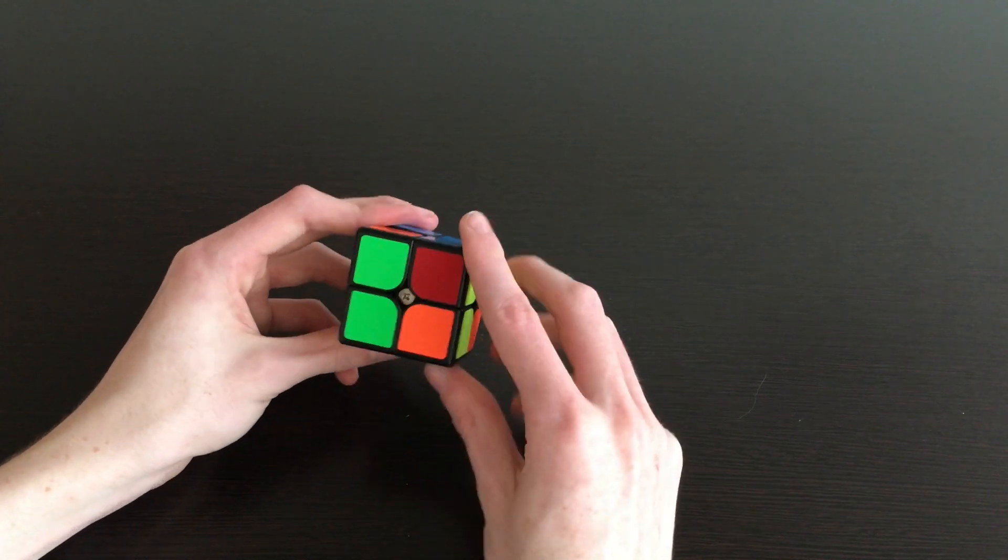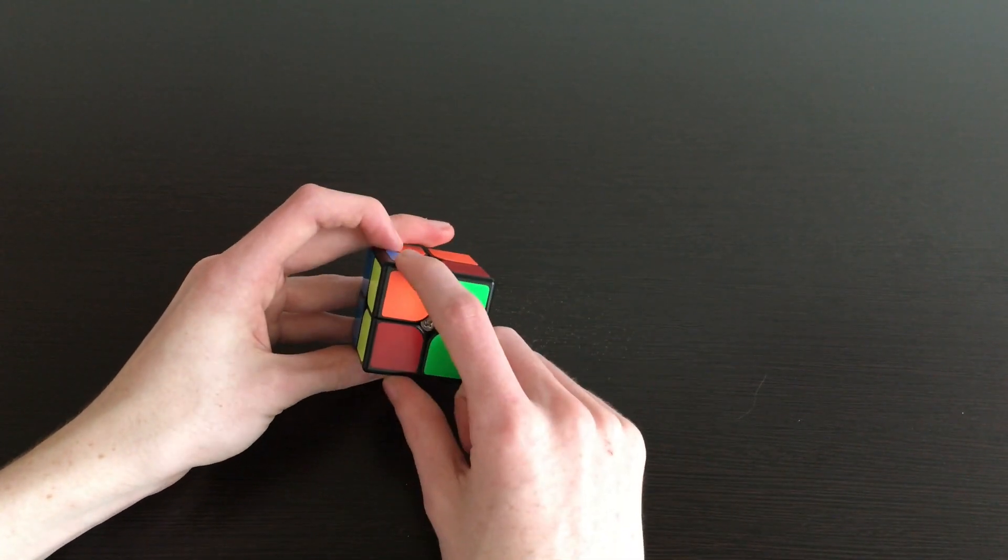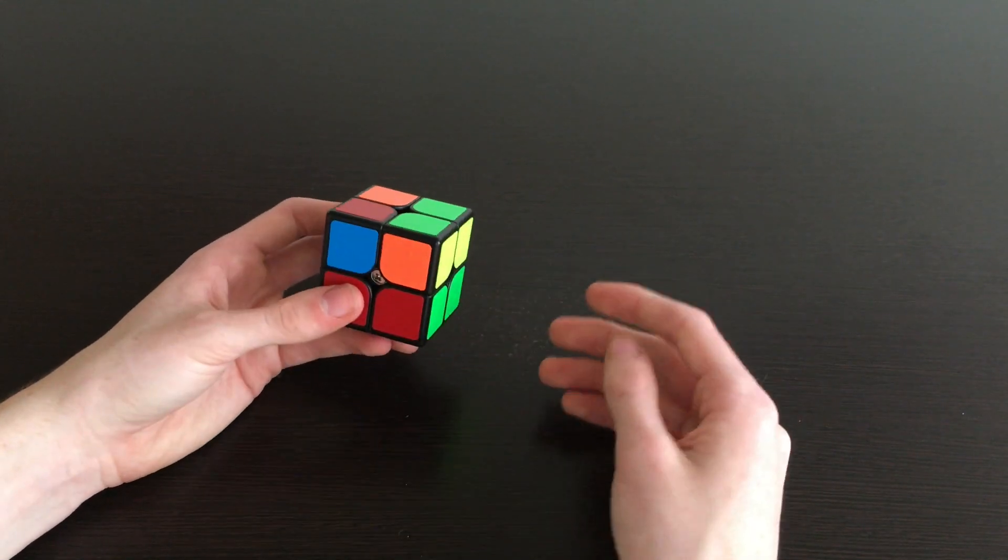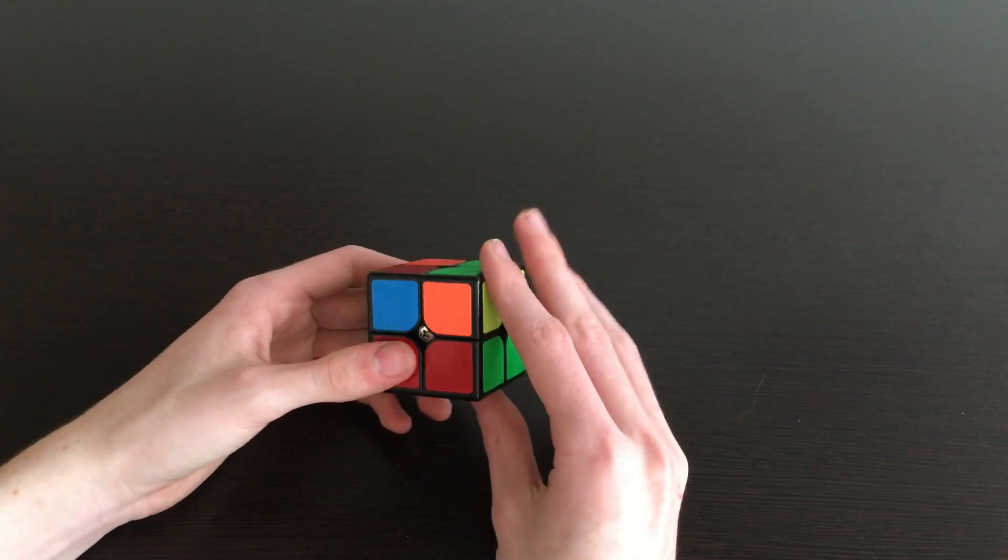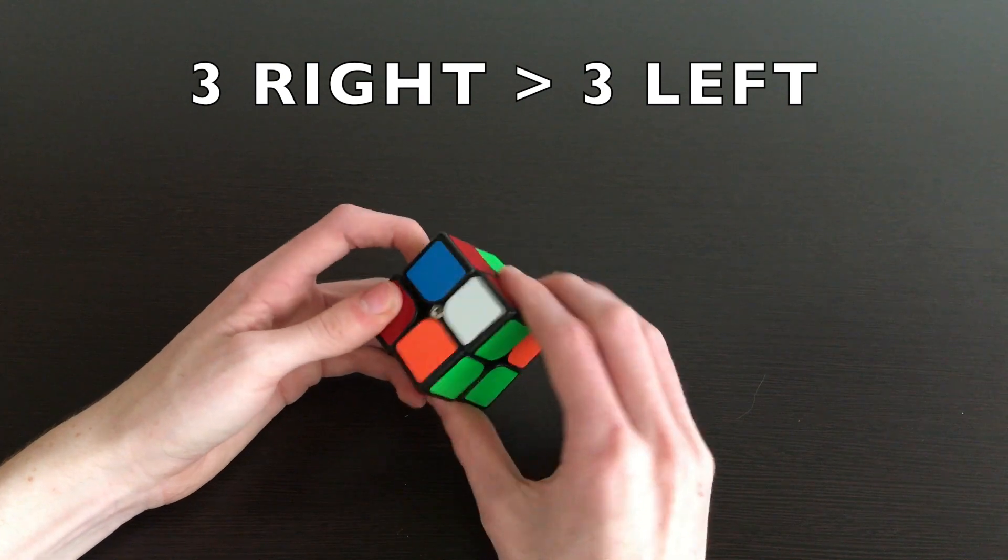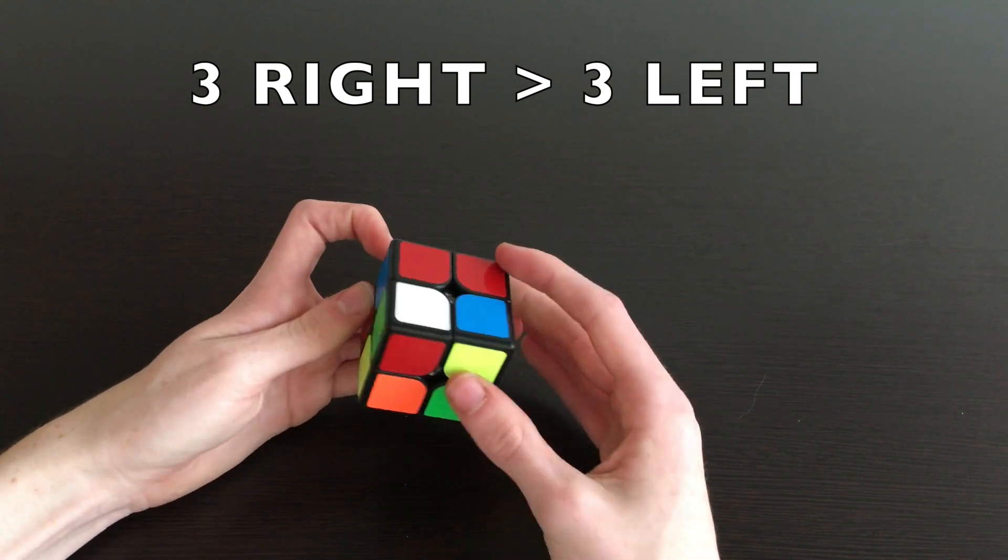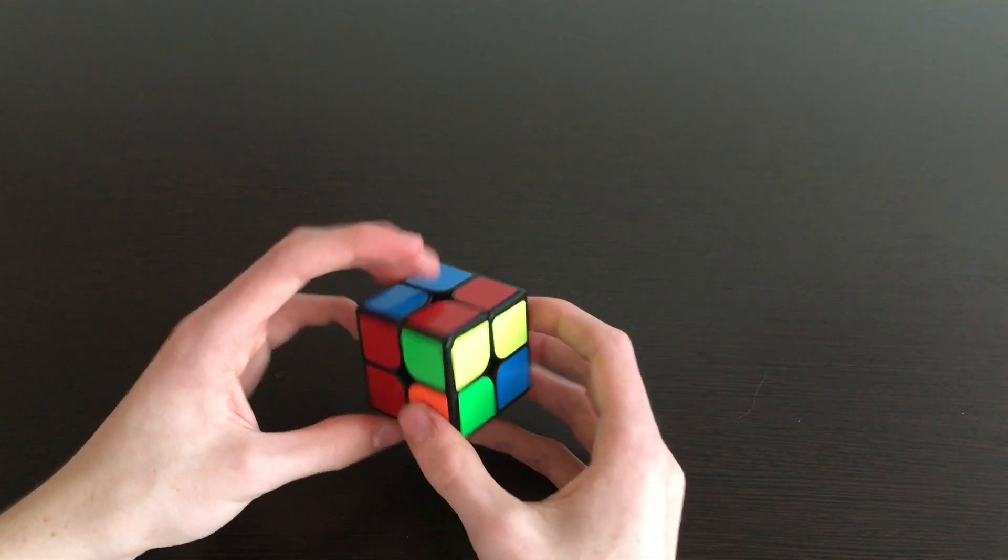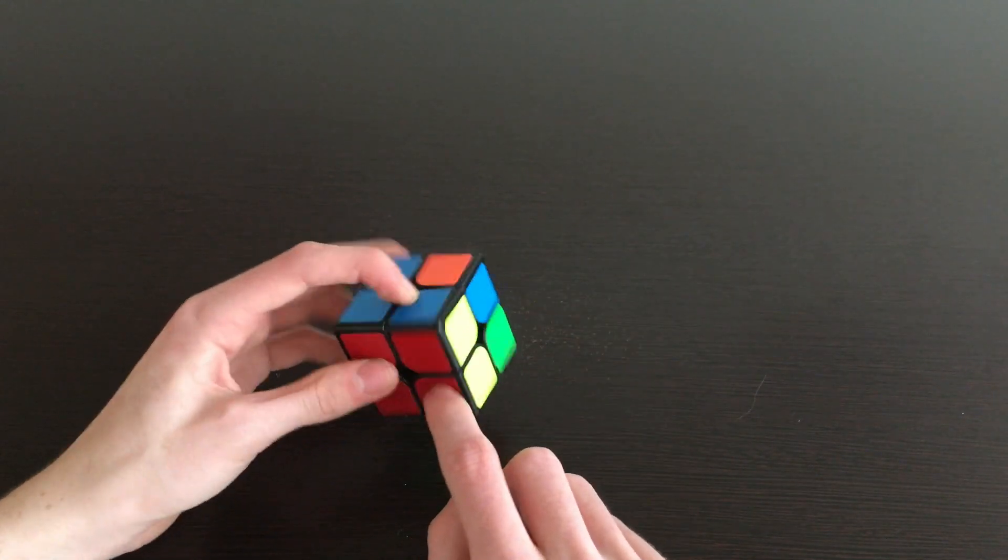I noticed that these two both belong here even though they're not correctly twisted, and these two need to swap. So to do this we would do like we would in the 3x3 tutorial. We would do right algorithm three times, turn face through, left algorithm three times. Then from there we can go ahead and line it up.